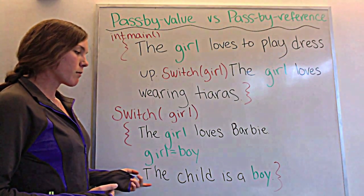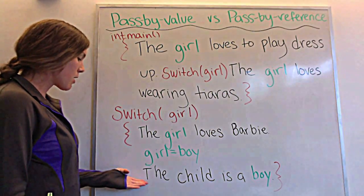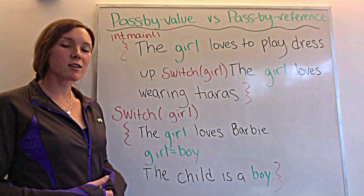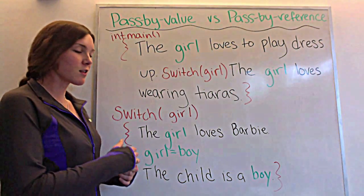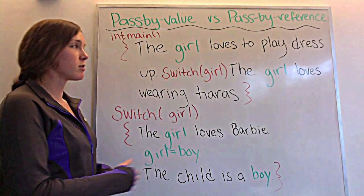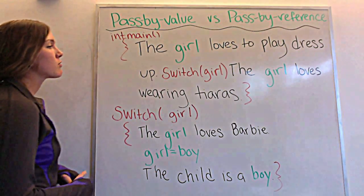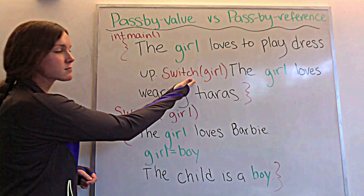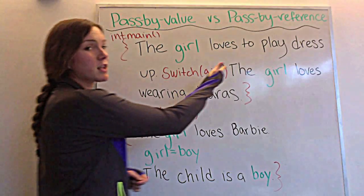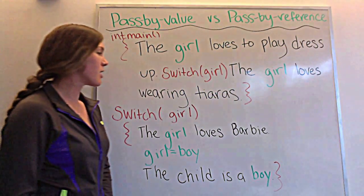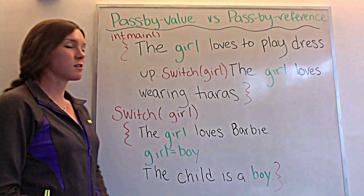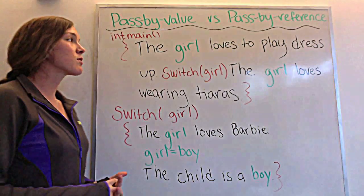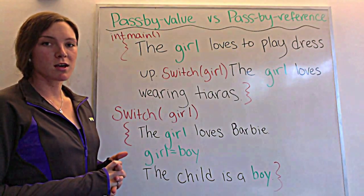My green is my variable. Inside the function it now says the child is a boy — which isn't true outside, but that is what is being computed inside this function. After we complete our function, we go on to the next sentence: the girl loves wearing tiaras. End of code. That is a pass-by value — the variable only changes inside of our second function.